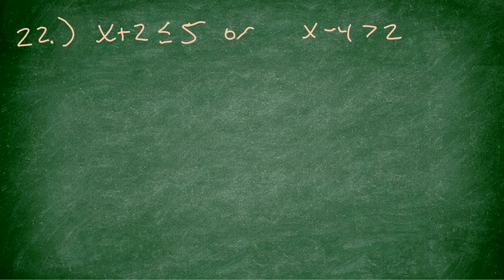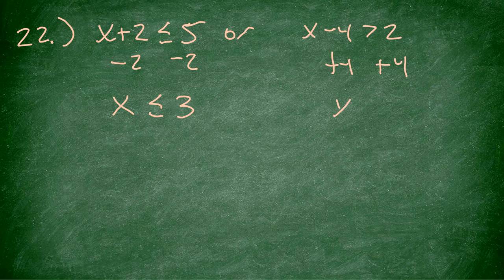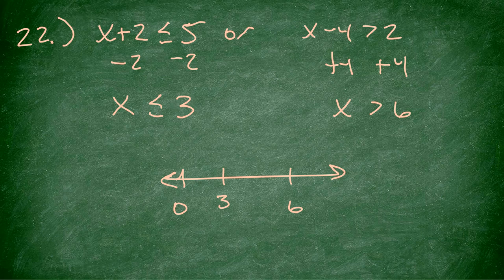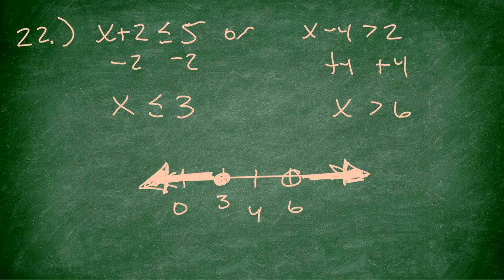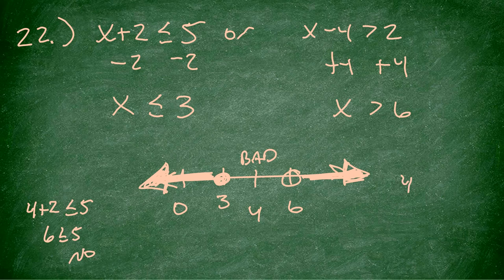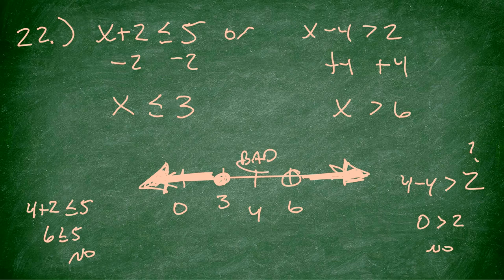Number 22 is an 'or.' First inequality: subtract 2, x is less than or equal to 3. Second inequality: subtract 4, x is greater than 6. Notice these are different steps. Closed dot at 3, open dot at 6. Shade to the left of 3 and to the right of 6. Check 4 — should be bad: 4 plus 2 is 6, not less than or equal to 5. And 4 minus 4 is 0, not greater than 2. Both false. That's exactly what we wanted.